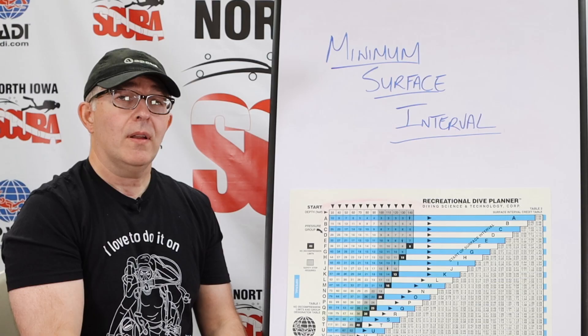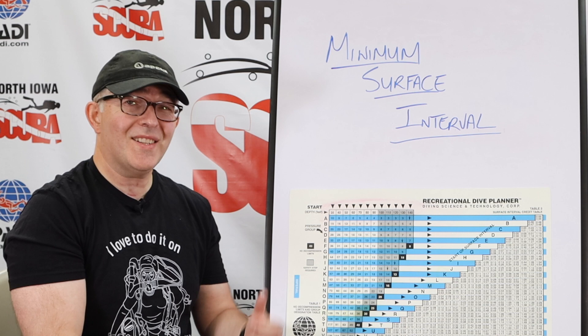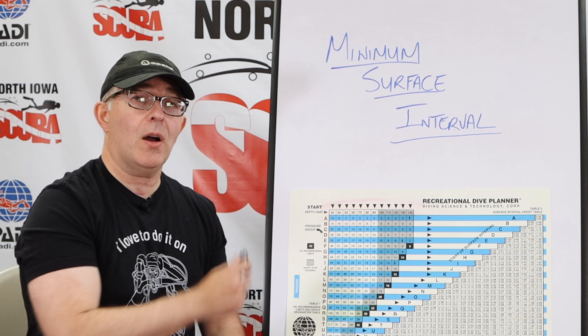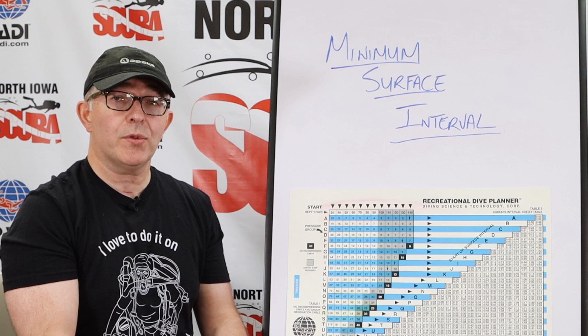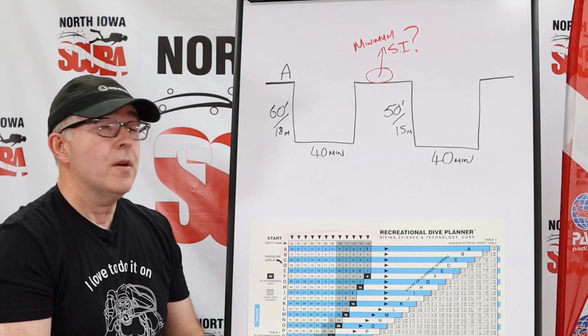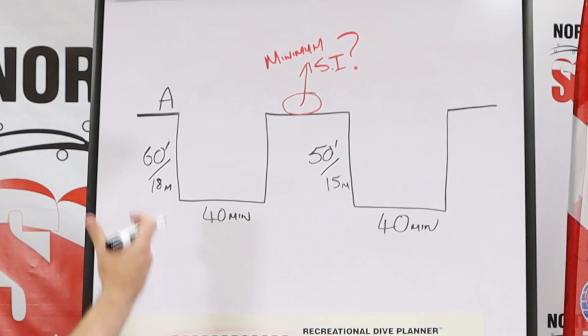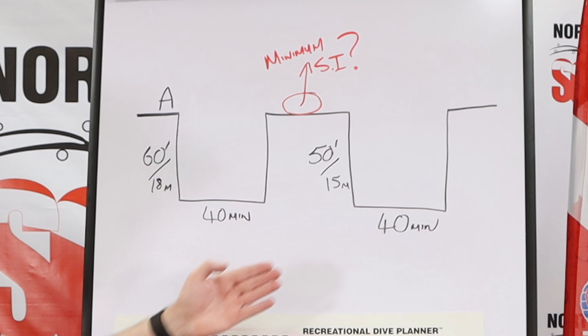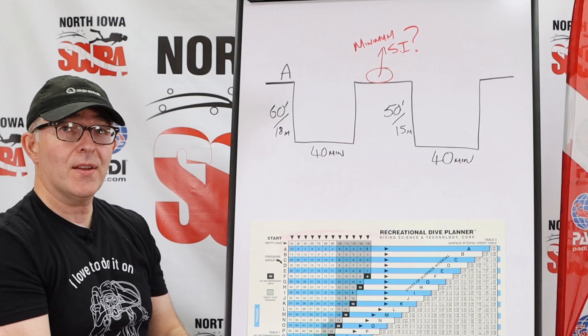Now that you understand adjusted non-decompression limits, let's talk about minimum surface intervals, because you are going to get questions on your final exam to figure out what a minimum surface interval would be between two particular dives. In this example, two divers want to make two dives. The first is to 60 feet or 18 meters for 40 minutes. The second dive, they want to make a dive to 50 feet or 15 meters and be there for 40 minutes. So how do we calculate this?